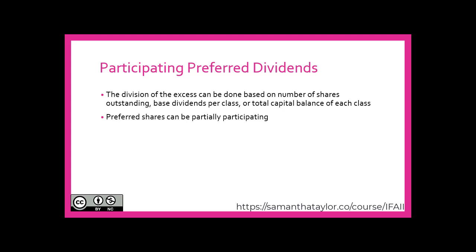The division of the excess can be done based on the number of shares outstanding per class or the total capital balance of each class. Preferred shares can be partially participating, where any dividend paid in excess of the stated dividend is capped at a specified amount, and any dividends declared above this cap go exclusively to the common shareholders.